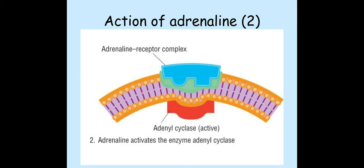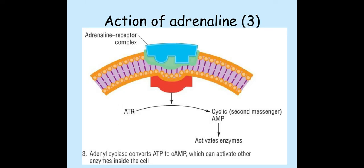Once the hormone has bound to the receptor, this will cause adenylyl cyclase — an enzyme inside the cell — to activate. Once adenylyl cyclase has been activated, it converts ATP into cyclic AMP. It is this cyclic AMP which is the second messenger — again, something I have seen come up a number of times in the exam — and this cyclic AMP will activate certain enzymes within that cell.